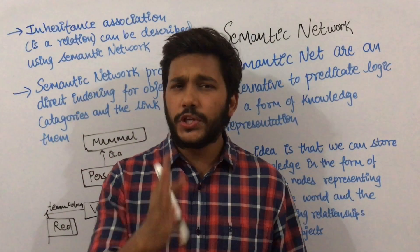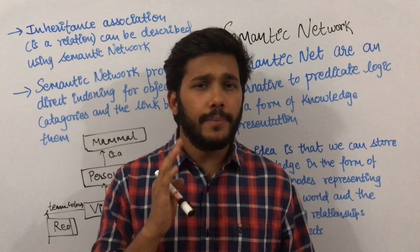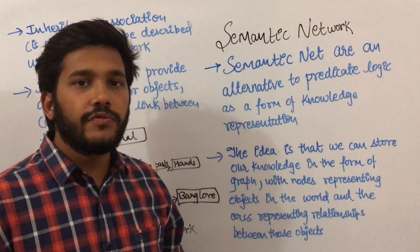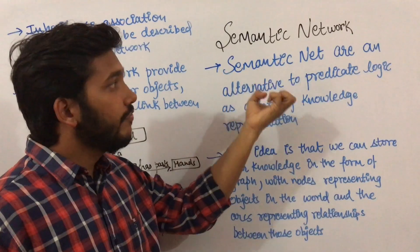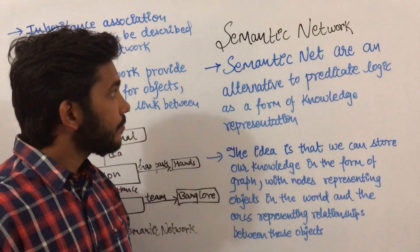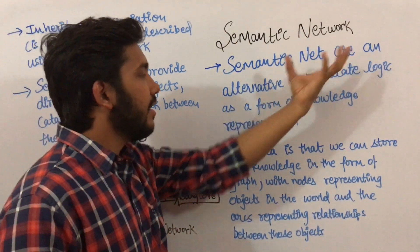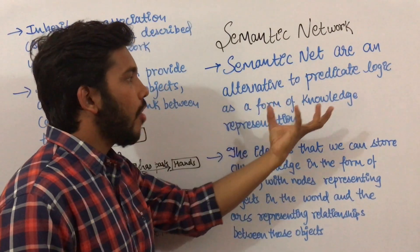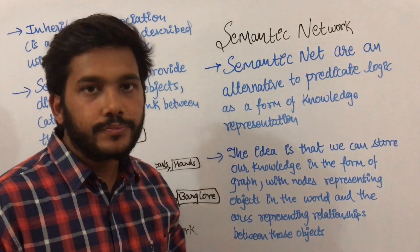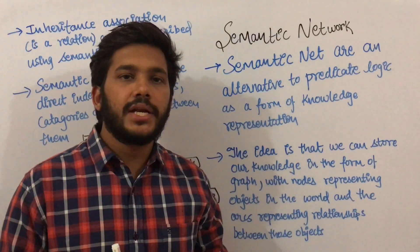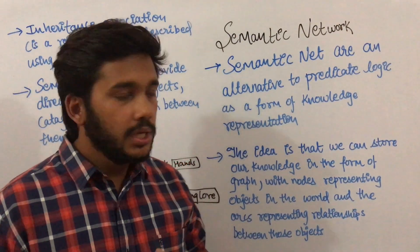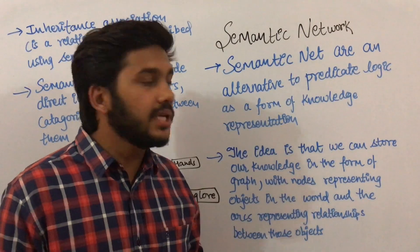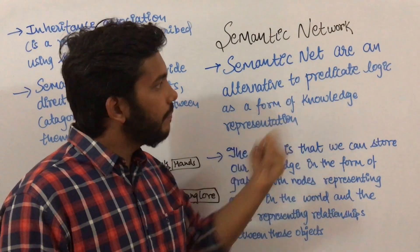In this video I'm going to talk about semantic networks. It is a first type of weak slot-and-filler structure. Semantic networks are an alternative to predicate logic as a form of knowledge representation. We have different forms of knowledge representation — we have discussed predicate logic, and now we will discuss semantic networks.